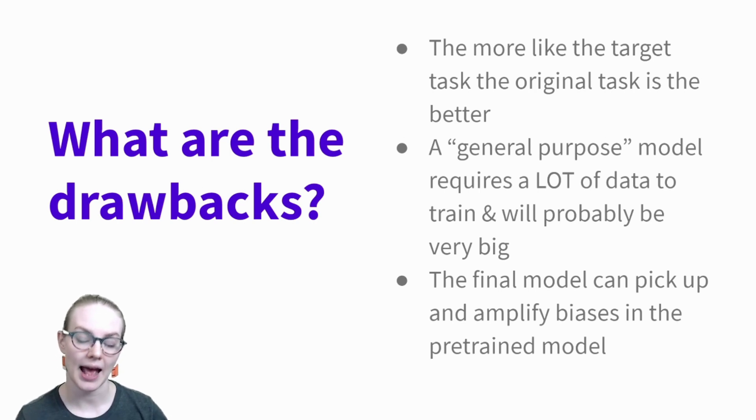And finally, using a pre-trained model means that any biases or trends that were found in the corpus that your original model was trained on will also show up in your final model. You're sort of taking on, yes, all of the benefits of the model already being trained, but also all the drawbacks of the model already being trained.